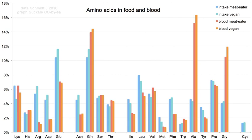Aside from the 22 proteinogenic amino acids, many non-proteinogenic amino acids are known. Those either are not found in proteins or are not produced directly and in isolation by standard cellular machinery. Non-proteinogenic amino acids that are found in proteins are formed by post-translational modification — modification after translation during protein synthesis. These modifications are often essential for the function or regulation of a protein. For example, the carboxylation of glutamate allows for better binding of calcium cations, and collagen contains hydroxyproline, generated by hydroxylation of proline.